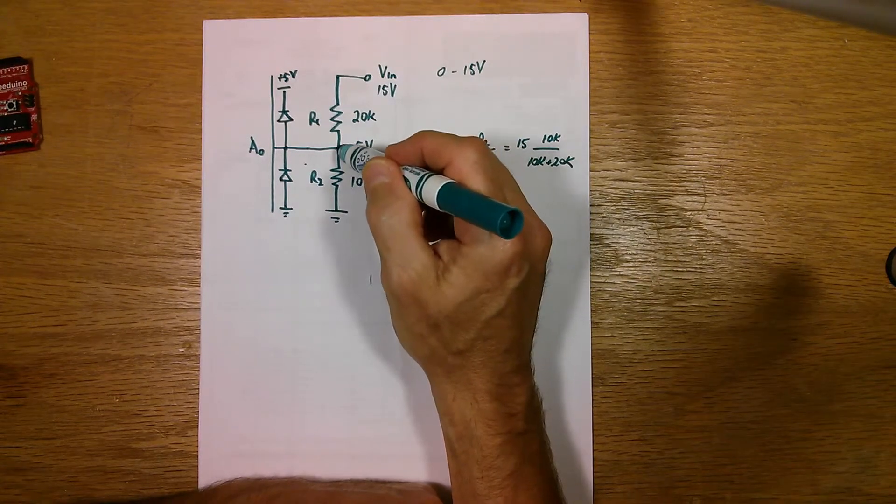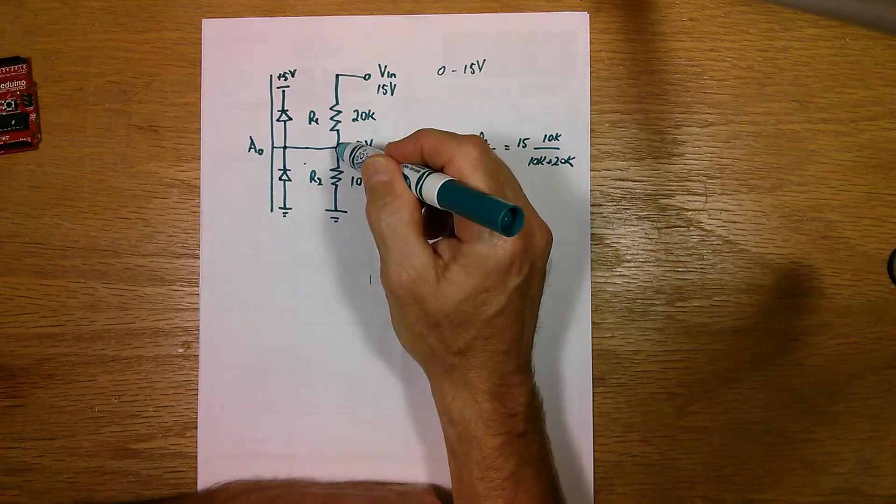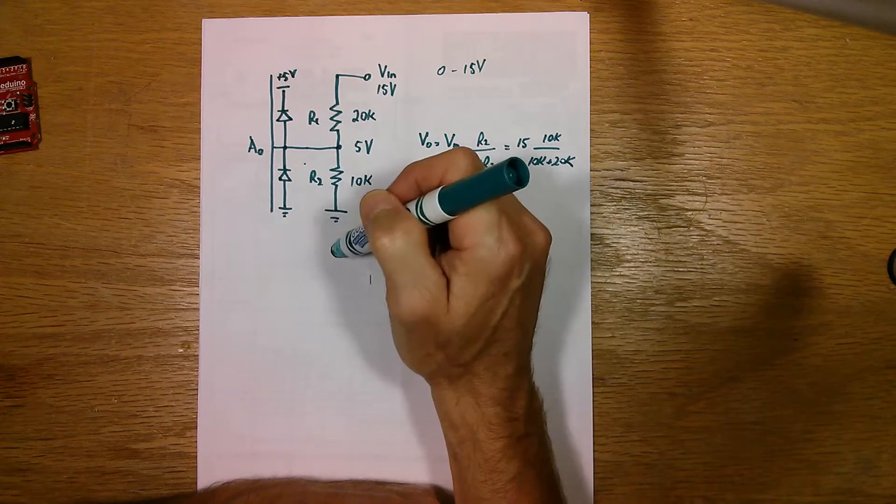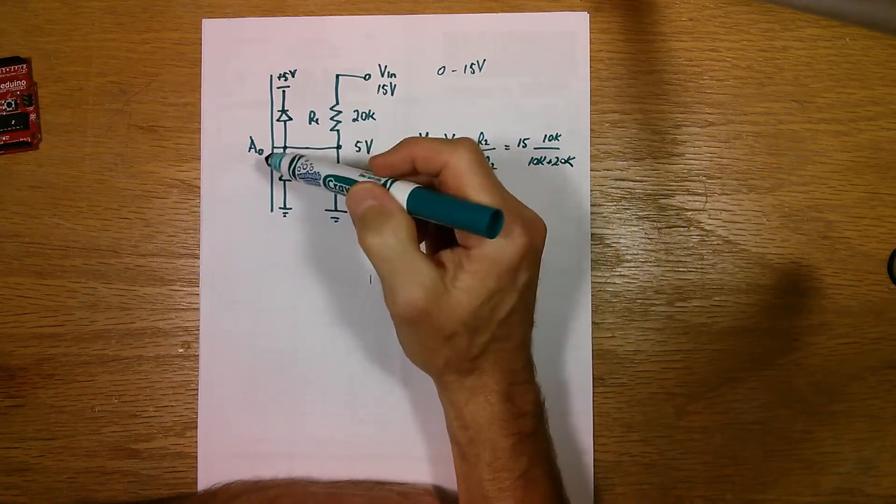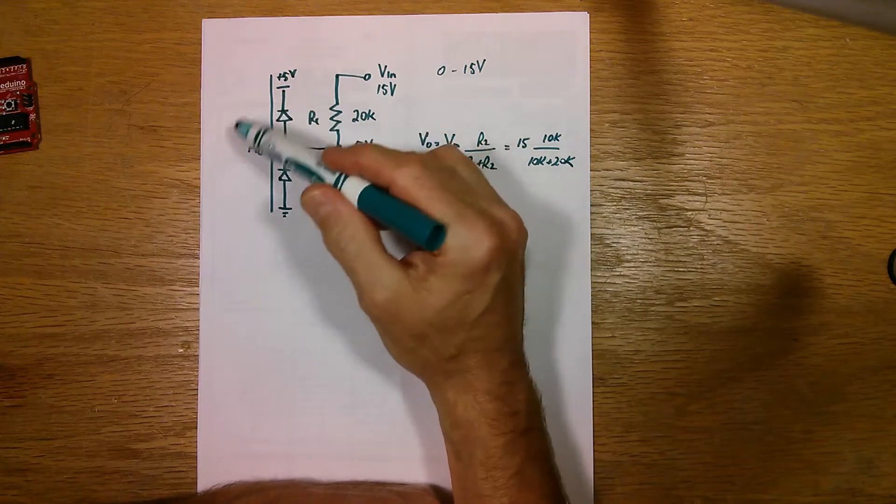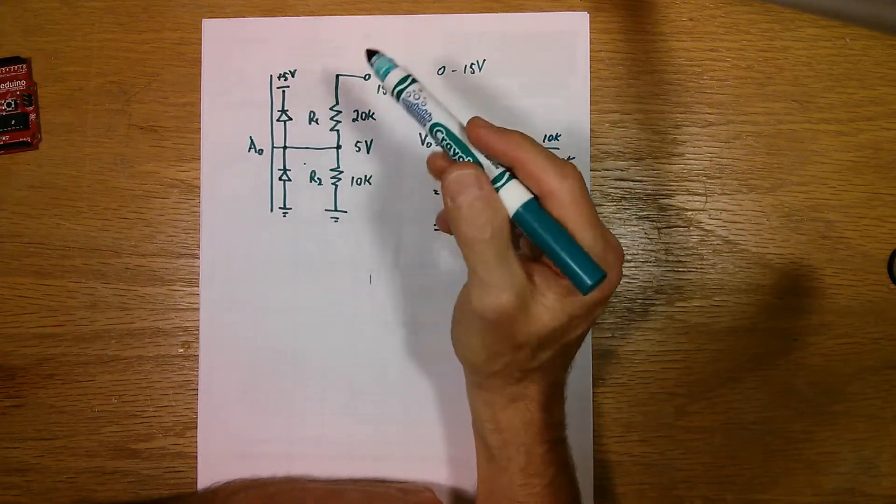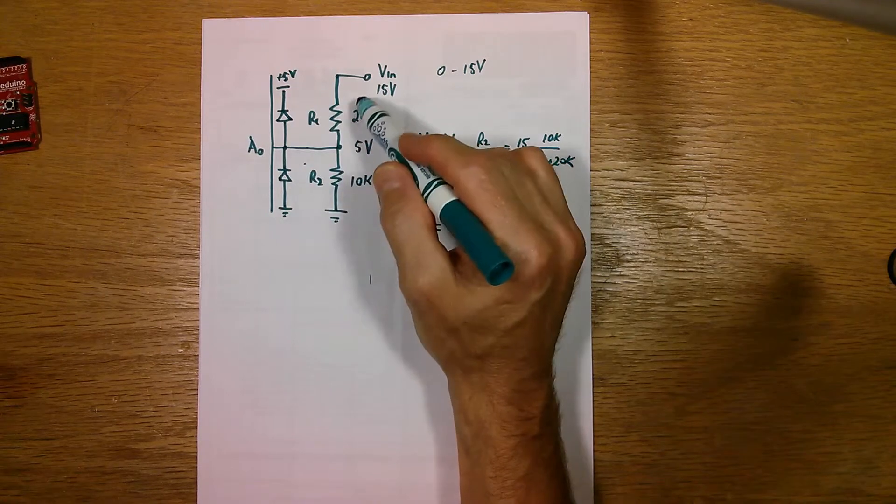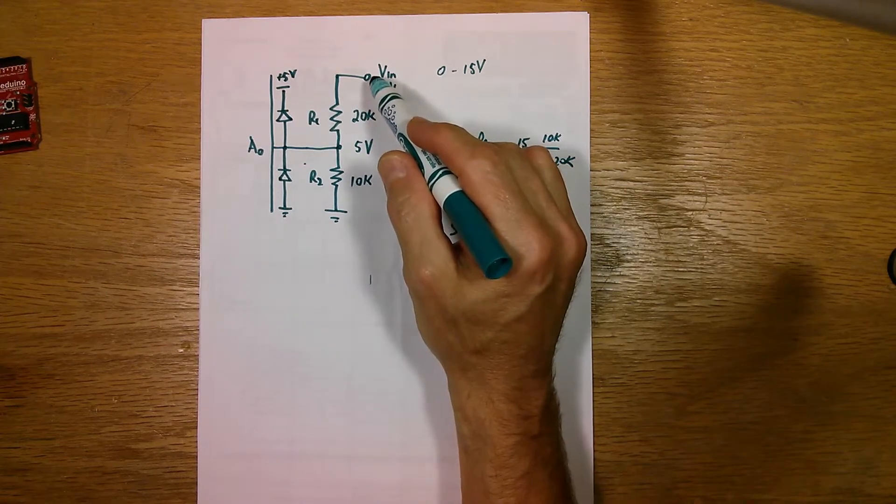And again, this voltage here, this pin will never go more than one diode drop below ground, which again, it's an acceptable voltage on the microcontroller pin. The microcontroller won't get damaged from that. So a simple protection for the input of a simple digital voltmeter.